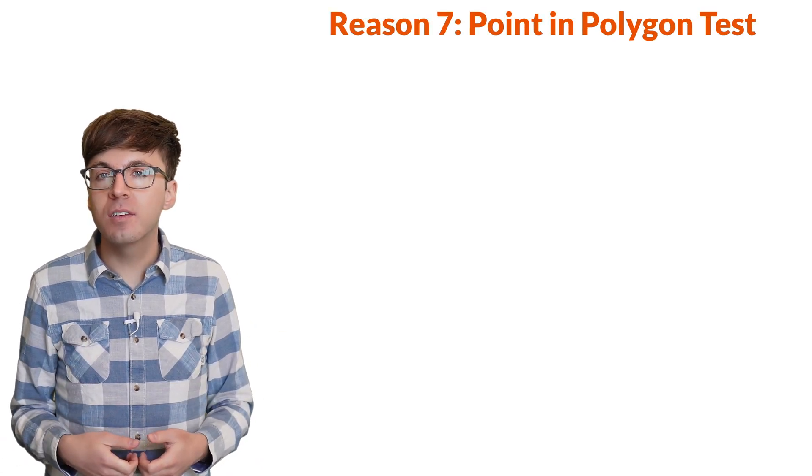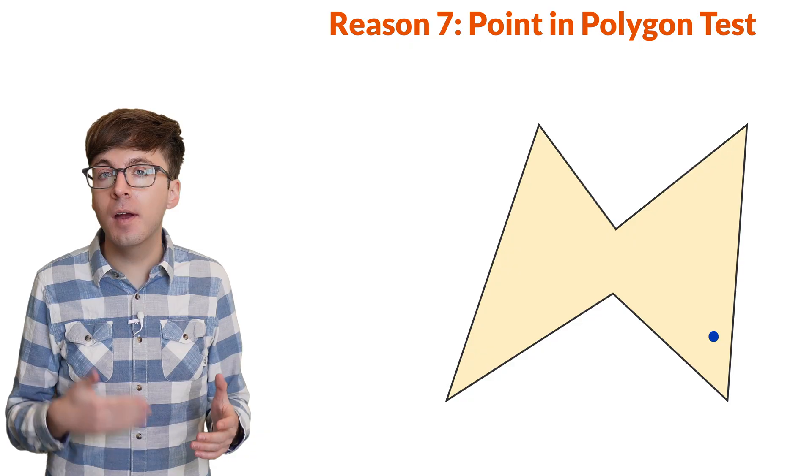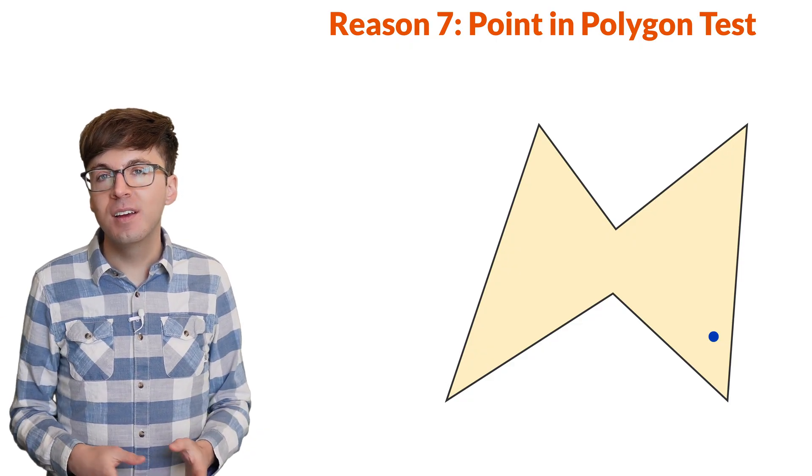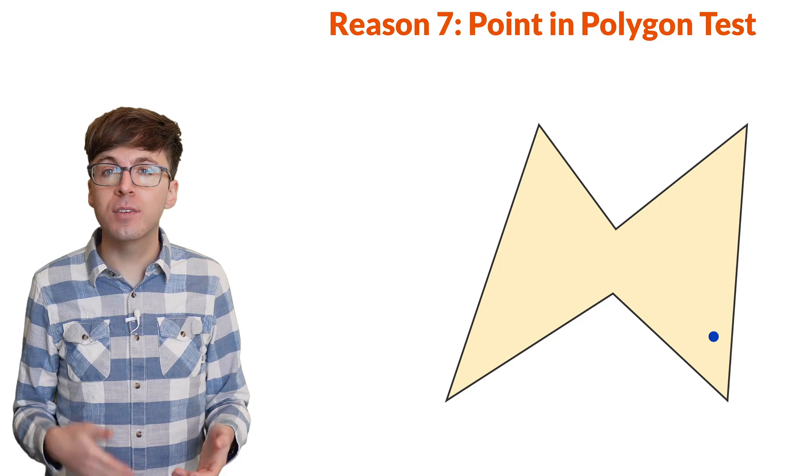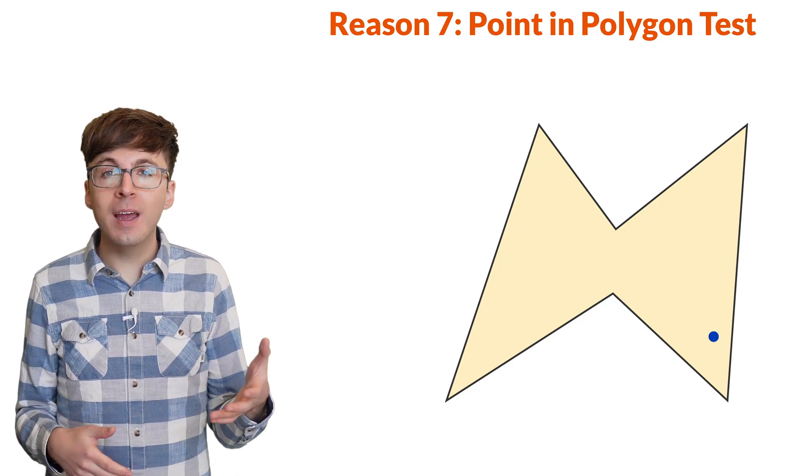Now, let's explore some more advanced mathematical ideas that show why we want 0 to be even. Reason 7. The point in polygon tests is a way to see if a point is inside or outside a polygon. Having a simple test for this is helpful for computer graphics and computer vision.